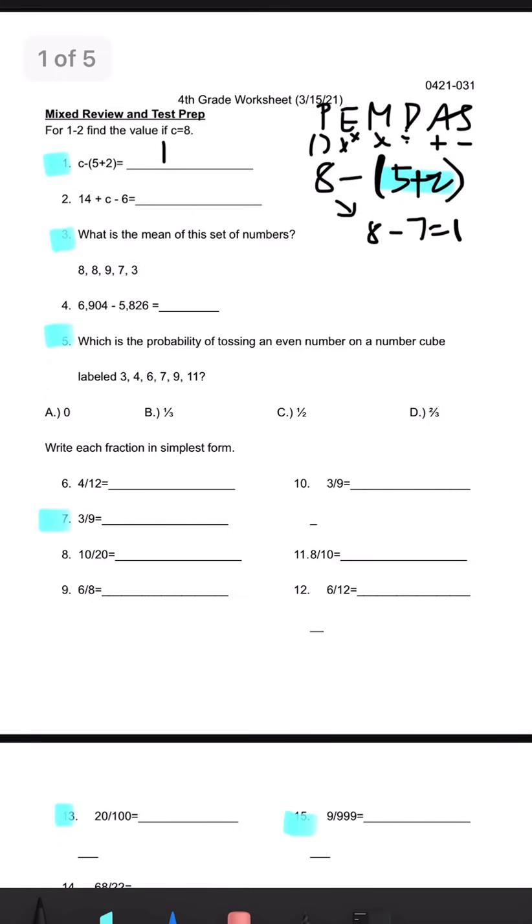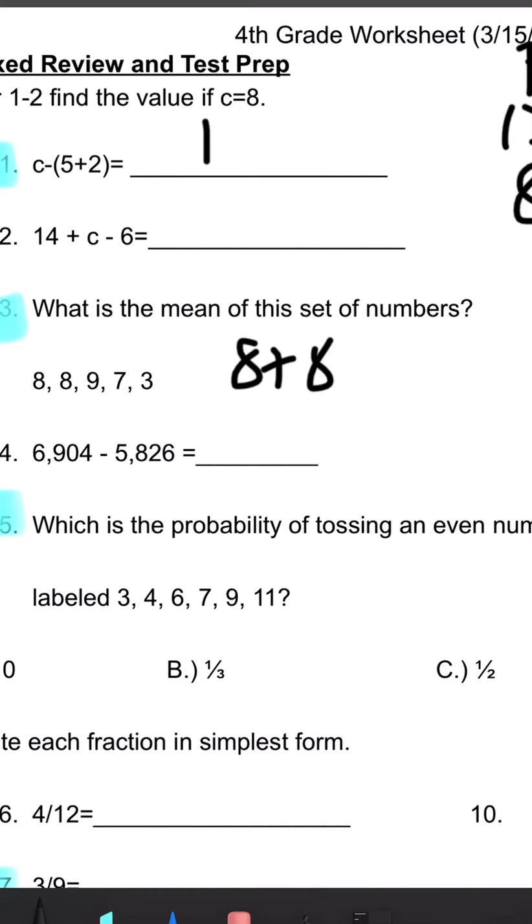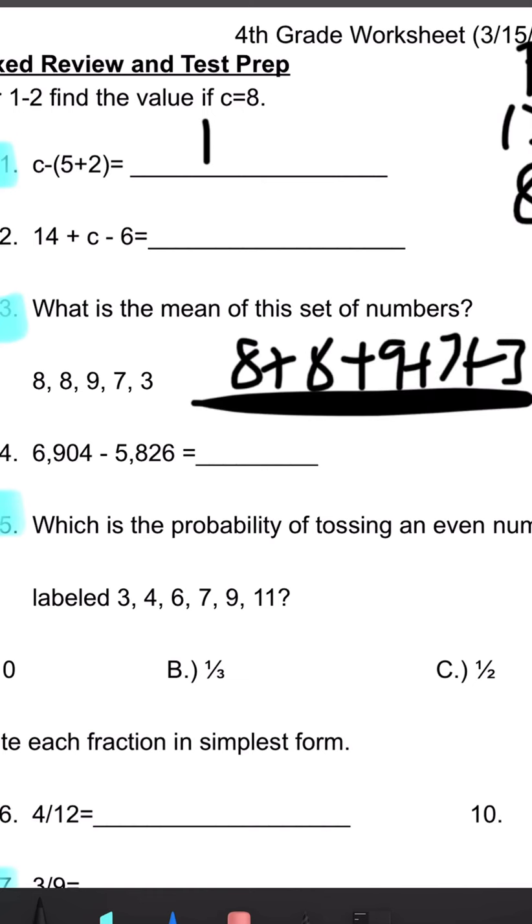Number 3, what is the mean of this set of numbers? So to find the mean, you want to add up all the numbers and then divide it by the total number of numbers you have. So we'll be doing 8 plus 8 plus 9 plus 7 plus 3 divided by 5 numbers.